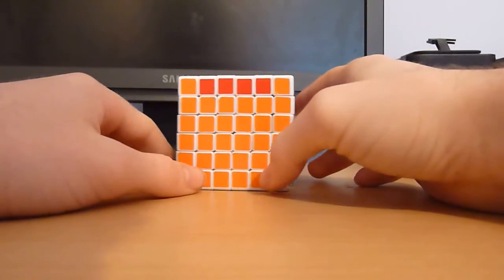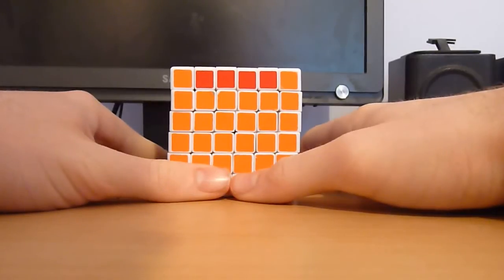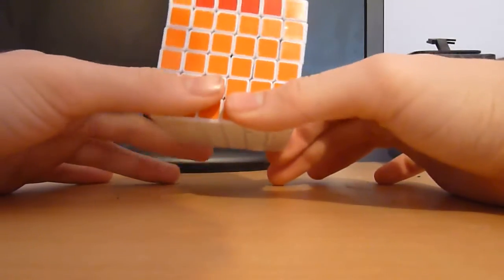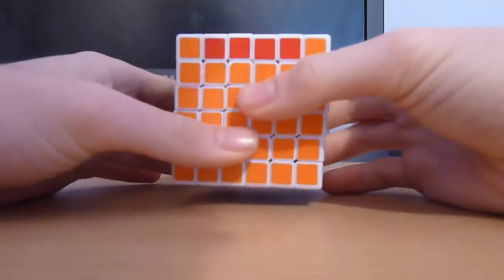Hi, this is my tutorial for the last layer 6x6 parity algorithms. Here we go. First case is when you need to switch this edge with this edge and everything else is solved.